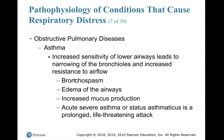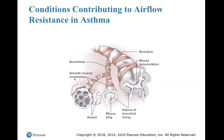Obstructive pulmonary diseases — asthma. Increased sensitivity of lower airways leads to narrowing of the bronchioles and increased resistance to airflow, which could be caused by bronchospasm, edema of the airways (that's swelling of the airways), increased mucus production. Acute severe asthma or status asthmaticus is a prolonged, life-threatening attack. Conditions contributing to airflow resistance in asthma include mucus accumulation, edema of the bronchial lining, mucus plugs, and the alveolar lining — you can see how they're affected because it's restricting airway and gas exchange cannot take place.